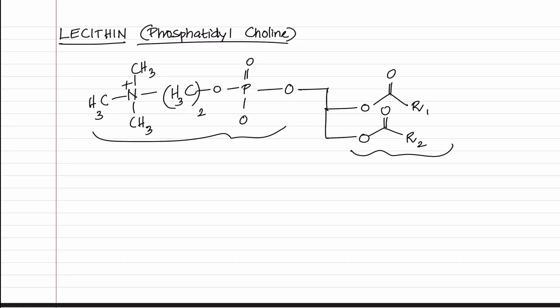Let us also discuss some characteristics of lecithin. Lecithin is a white waxy substance. It can also be a mild emulsifying agent, meaning it dissolves fats. They can form stable compounds with proteins and carbohydrates. The last point is that choline is an important factor in prevention of fatty liver.